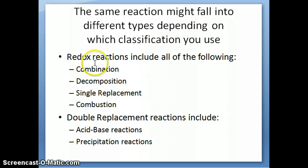Now, it turns out that because there's two ways of classification, they're basically related to each other. So earlier, I was mentioning combination, decomposition, single replacement, and combustion. All of these are really just examples of redox reactions. As you'll see when we work through some examples, all of these reactions have some kind of electron being transferred from one reactant to another. And so they belong to this redox reaction category.